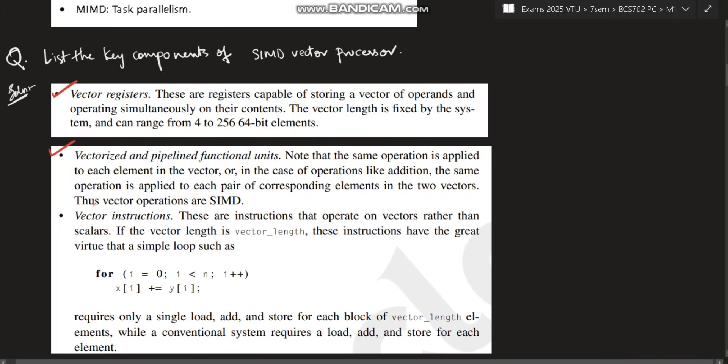Vectorized and pipelined functional units: wherever operations like addition, subtraction are performed, the answer will be stored in vectorized and pipelined functional units. Next is vector instructions - instructions that operate on vectors rather than scalars. If the vector length is known, these instructions have a great virtue that a simple loop such as this will be eliminated. Instead of finding out the length by a for loop, we can directly calculate it using vector length. It is more convenient and faster.